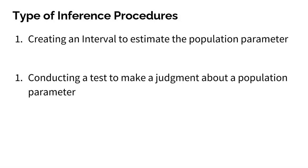There are two types of inference that we look at, two types of procedures at least. Creating an interval to estimate the population parameter, meaning we have no idea what a population parameter is, but a sample statistic points us into a direction of where we think it could be.